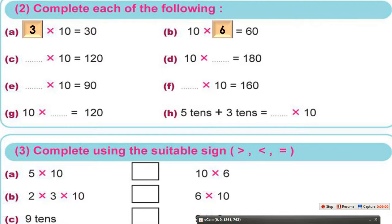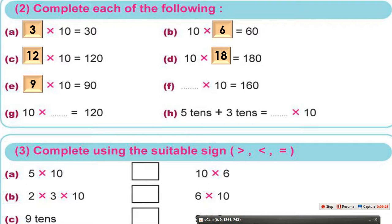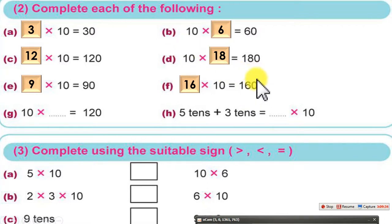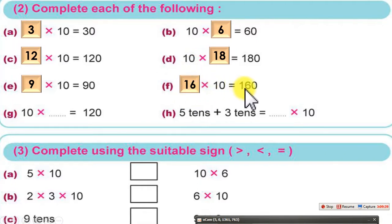10 times 6 equals 60. When multiplied by 10, the result is 120 — cancel the 0 and you get 12. 12 times 10 equals 120. 10 times 18 equals 180. 9 times 10 equals 90. 16 times 10 equals 160 — cancel the 0 and you know the number is 16, so 16 times 10 equals 160.